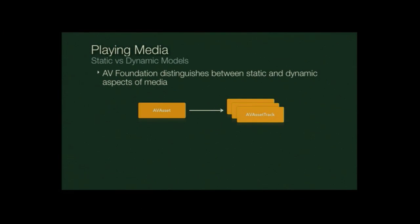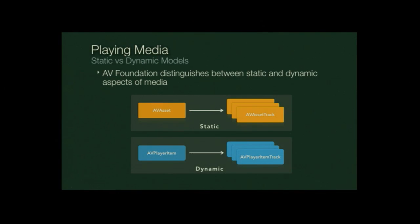AVAsset and AVAssetTrack have properties like duration, and you can find out if they're exportable or playable, but you won't see things related to timing like current time or the ability to seek to a particular location. That's because they only model the static aspect of a media resource — on their own they're really unsuitable for playback. So whenever we want to play an asset, we need to construct their dynamic counterparts: AVPlayerItem and AVPlayerItemTrack. These carry the presentation state and are ultimately what we feed into an AVPlayer.